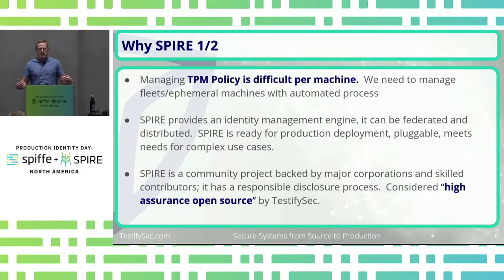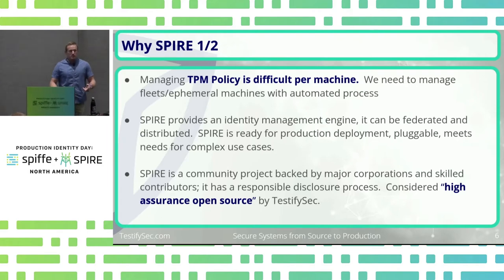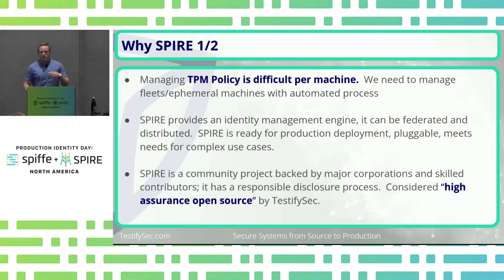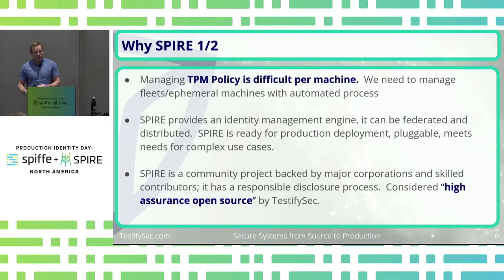Spire provides an identity management engine that is federated and distributed. Best of all, it's really ready for production deployment. We've been running Spire in some production deployments for various customers for a long time — it's been rock solid. Its pluggable design really meets needs for complex use cases; you can take Spire and really make it whatever you want it to be.